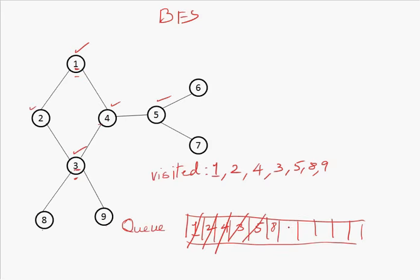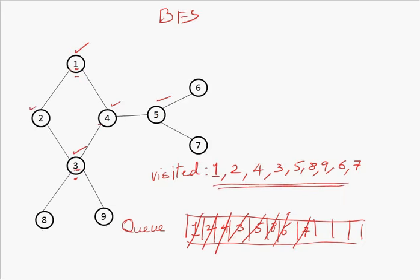The next vertex for exploration is 5. For 5, the adjacent vertices are 6 and 7, so I visit 6 and then 7. The next vertex for exploration is 8. For 8, there is no unvisited adjacent vertex — 3 was there but is already visited, and 6 and 7 were also already visited. So this is the breadth first search traversal we got. By picking the first vertex as 1, we have completed the traversal. This is how breadth first search works.